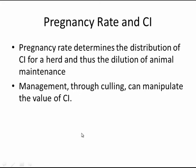The other concept is that pregnancy rate and calving interval are related. Pregnancy rate, the percentage of eligible cows getting pregnant every 21 days, determines the distribution of calving intervals for a herd and thus the dilution of animal maintenance. Management through culling can manipulate the value of calving interval.